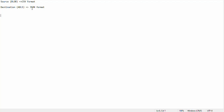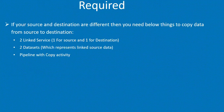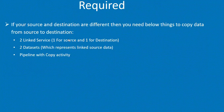To implement this kind of scenario, if your source and destination are different, you need the following things to copy data from source to destination. In our case, source is blob storage and destination is Azure Data Lake Storage, so both are different. To implement Copy Data Activity between these two, we need at least two linked services — one for source and one for destination — then two datasets, and one pipeline with copy activity.